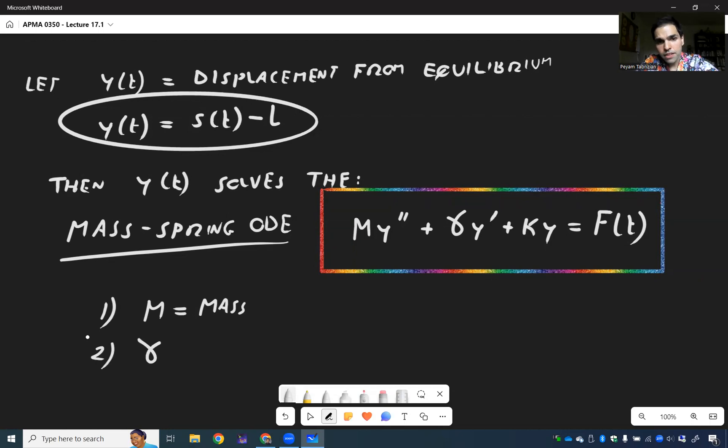Gamma is what's called a damping constant, and this is what makes the mass eventually slow down. So think friction.